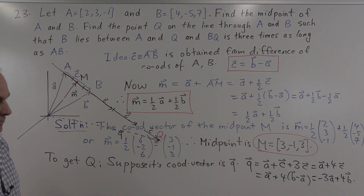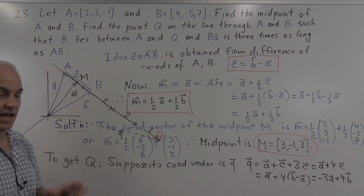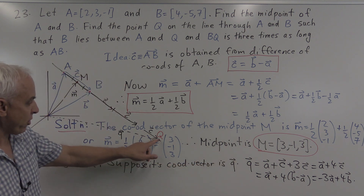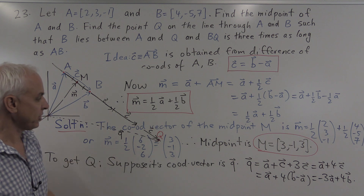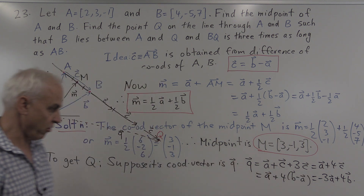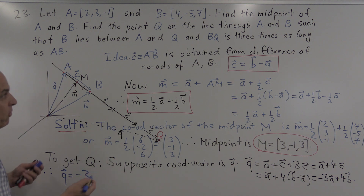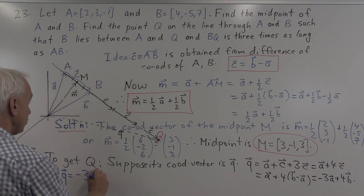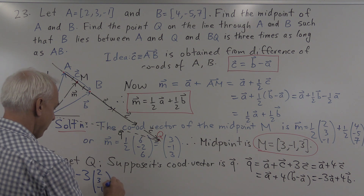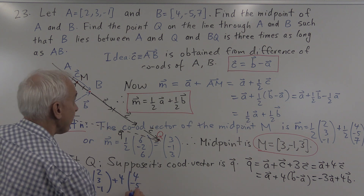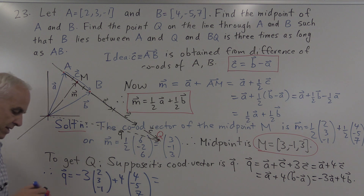That's an interesting formula that works no matter what the points A and B happen to be. So Q has coordinate vector Q = −3a + 4b. In our particular situation, we have Q equals minus 3 times the vector A, which is (2, 3, −1), plus 4 times the vector B, which is (4, −5, 7). So we have to compute that combination.